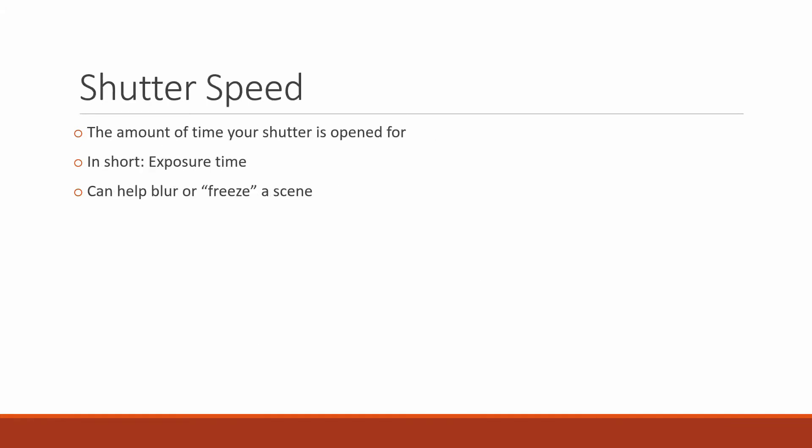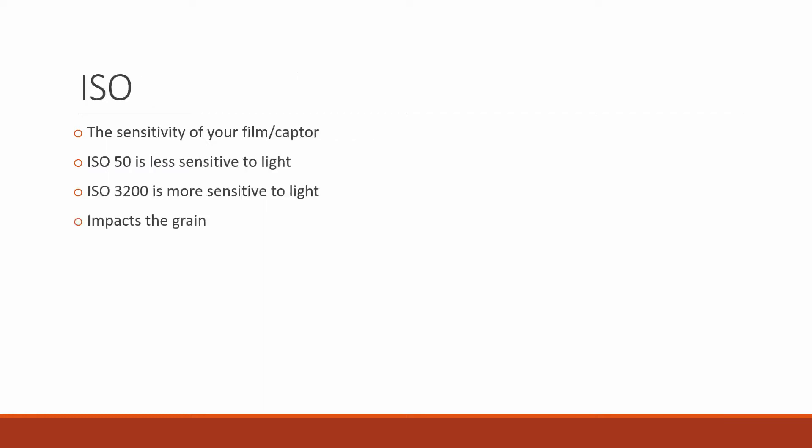The shutter speed is another parameter you can control. It controls the amount of time your shutter is open. On older DSLRs you can actually see mechanical curtains inside; cell phones and mirrorless cameras use an electronic system, but the concept is the same — you are controlling the exposure time. Controlling the shutter speed can help you blur or freeze a scene.